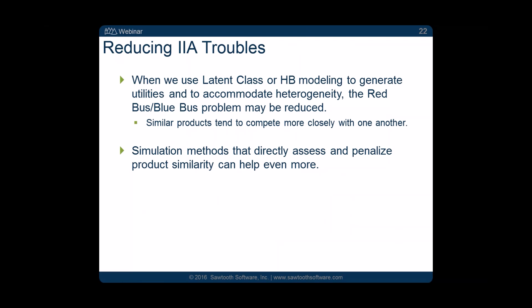The IIA problem isn't always huge anymore. If we use latent class or especially hierarchical Bayes modeling, accommodating heterogeneity makes a lot of that red bus/blue bus problem go away. Similar products tend to compete more closely with one another — Pepsi and Coke have similar utilities for each individual respondent while milk has a very different one. We can also use a simulation method that directly assesses product similarities and penalizes similar products by causing them to take share more from each other.